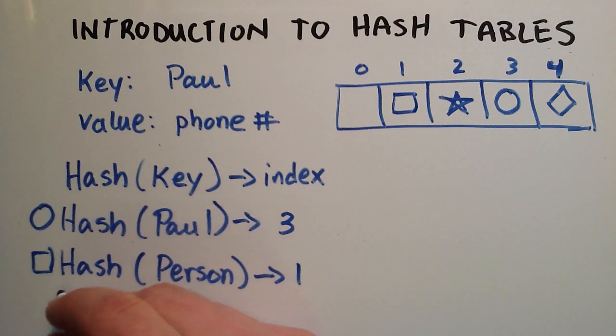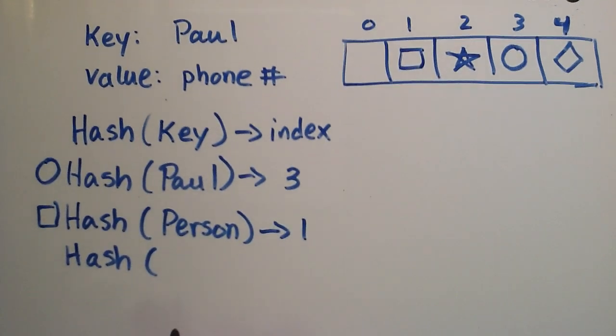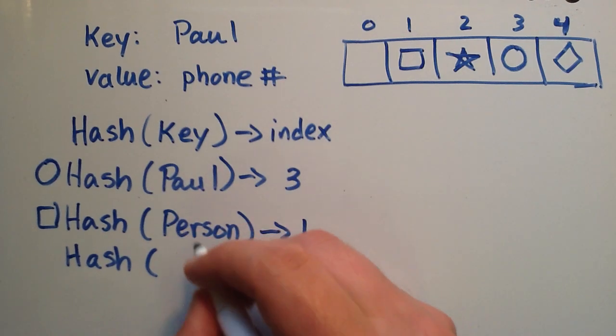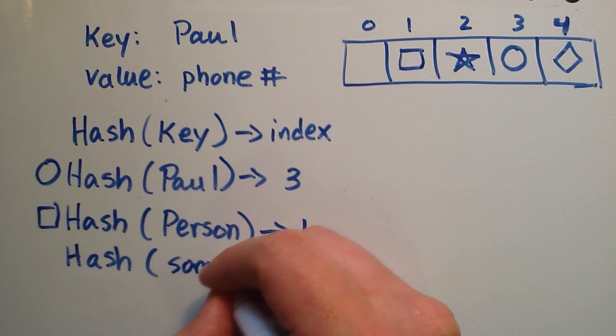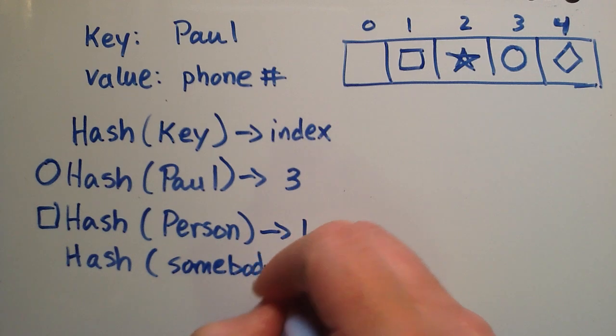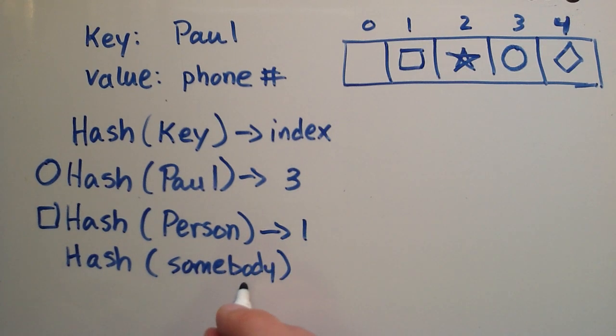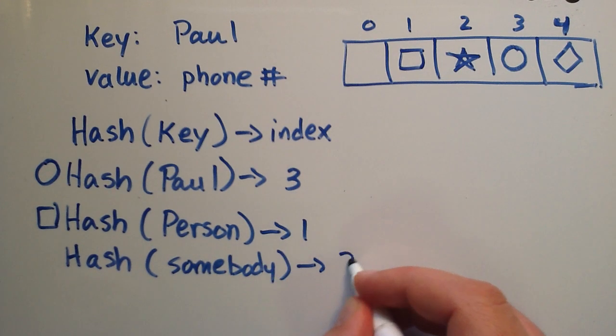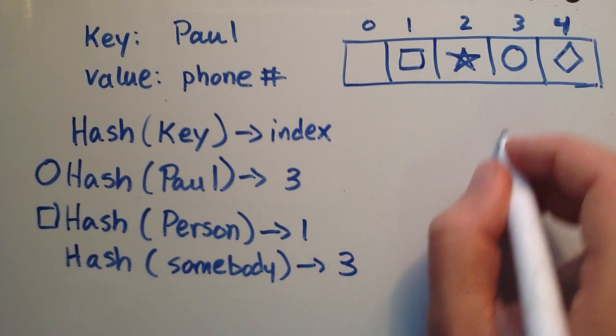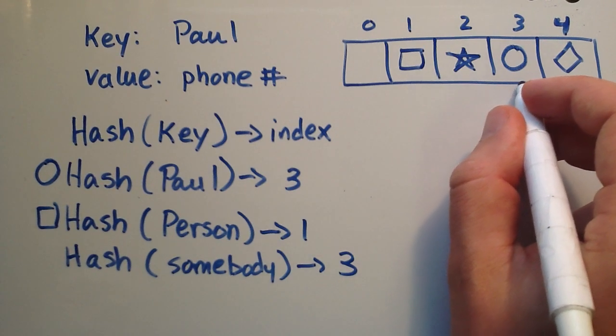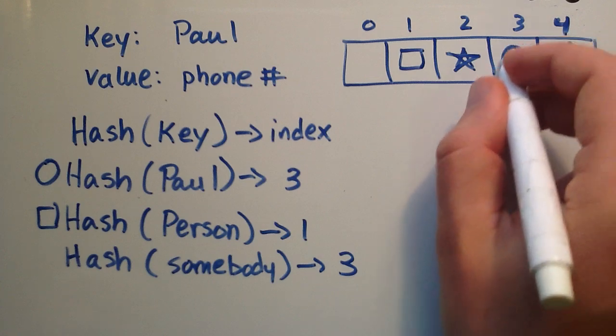But what happens if we're wanting to add another person? We're adding somebody else's number. And what if we find out that their hash value ends up being 3? Well, we go and we look, and we go, uh-oh, there's already a name and phone number stored in index 3.